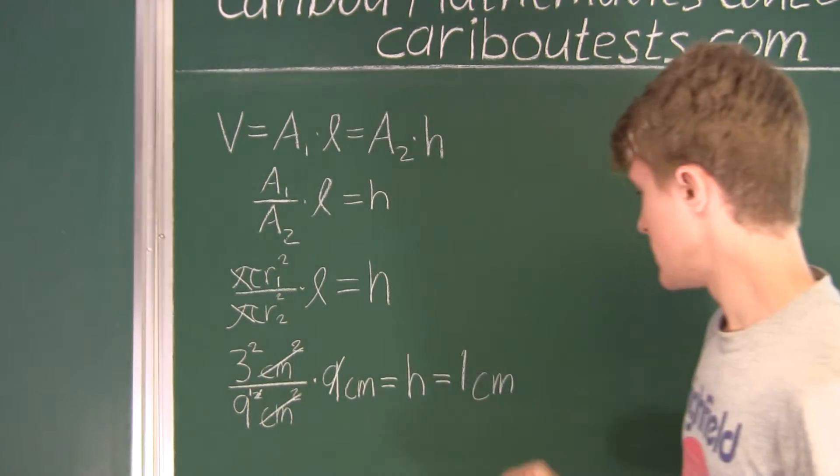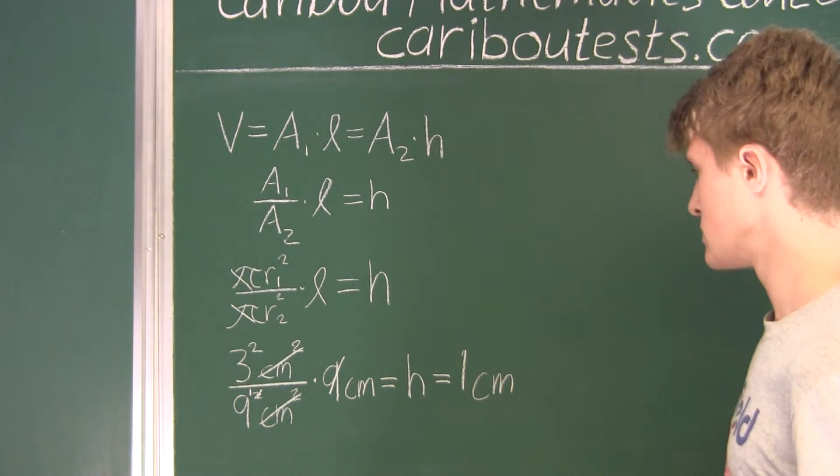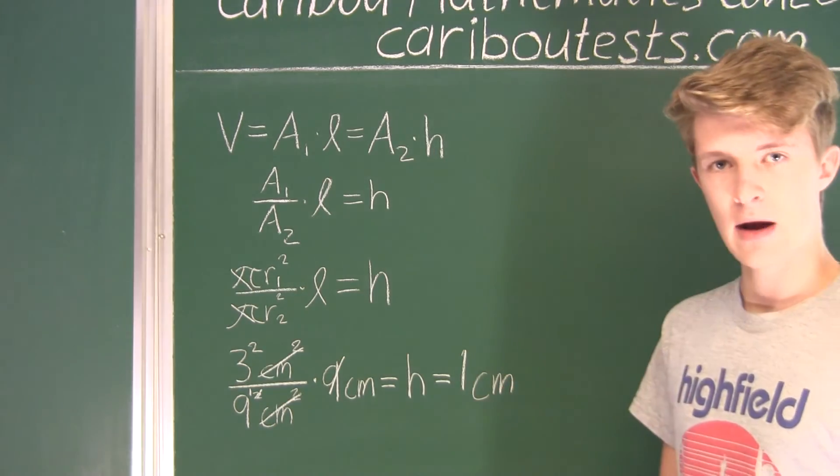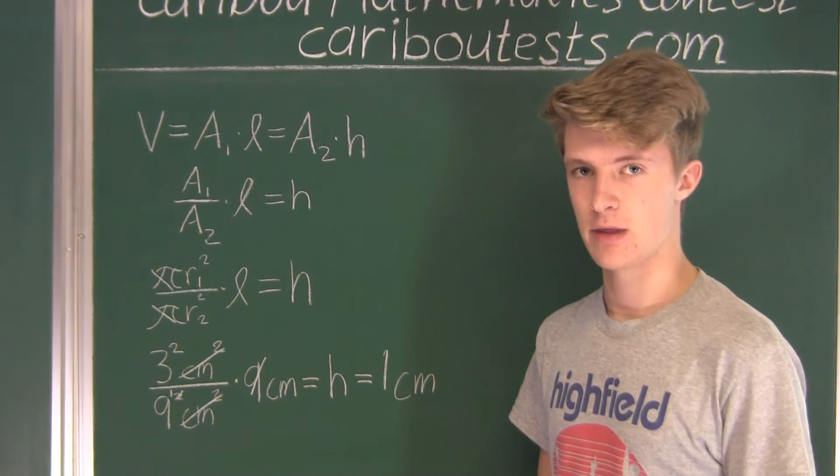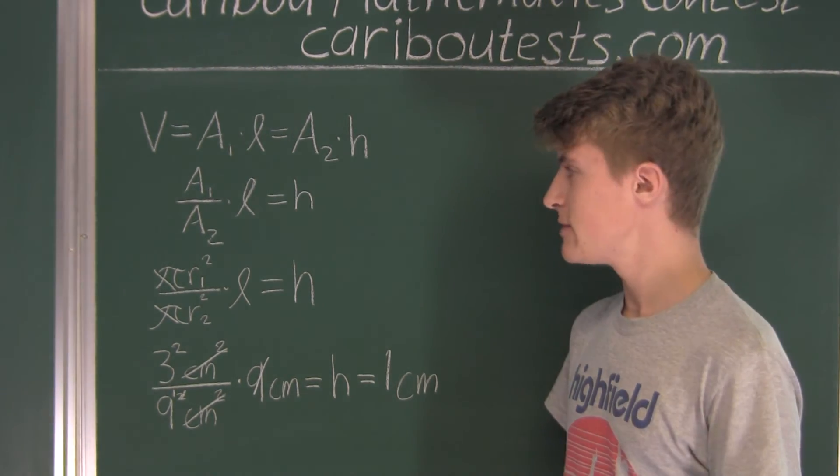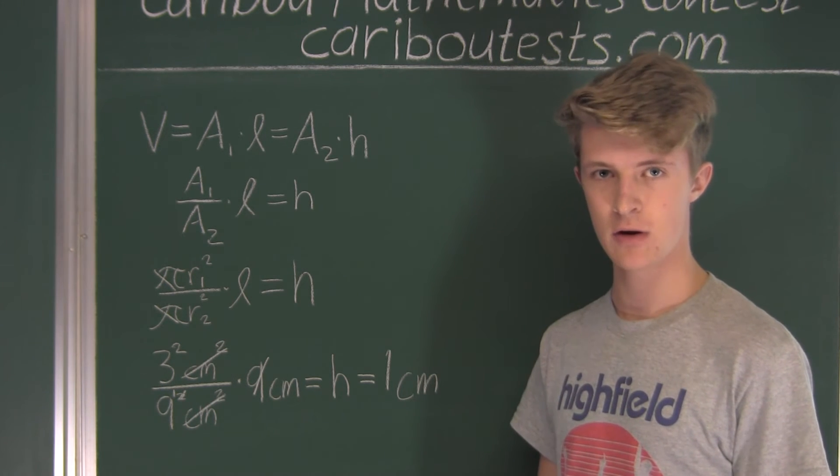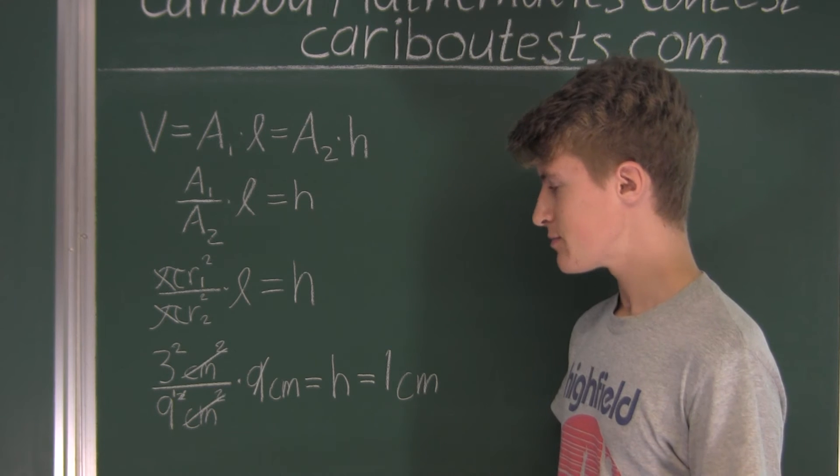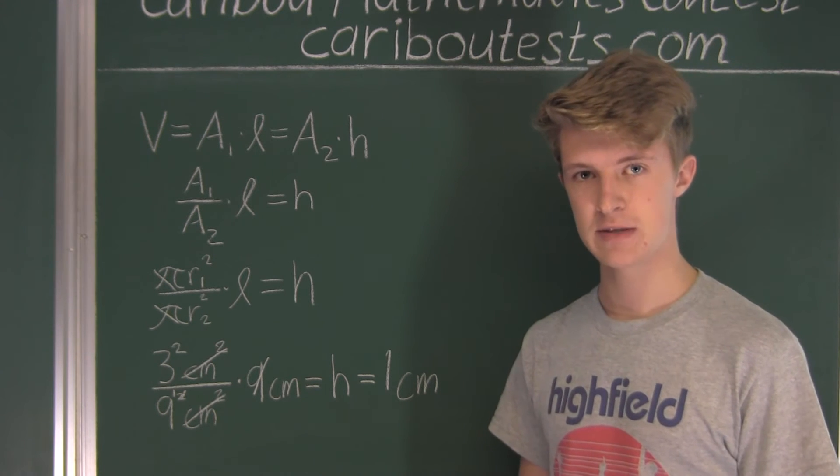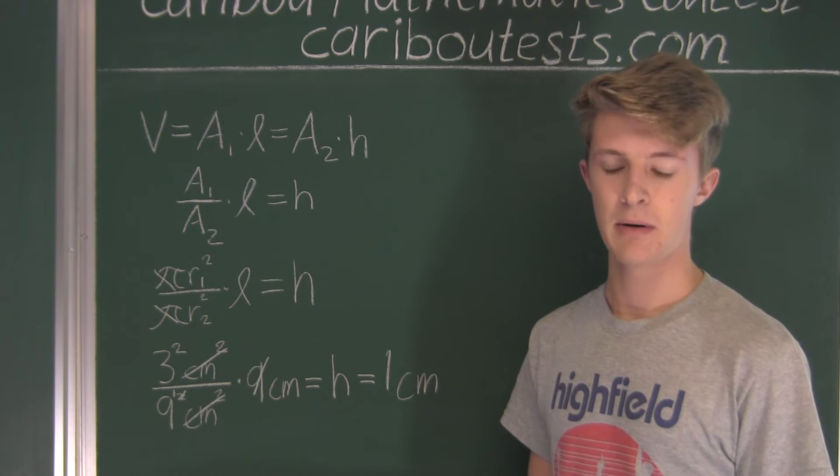So therefore, we know that the filling height of the second cylinder is 1 centimeter. Now we didn't actually need to know the formula for the area of a circle. Because we know that if we scale any 2D shape, whether it's completely irregular or regular,